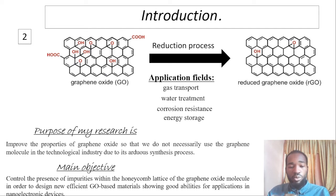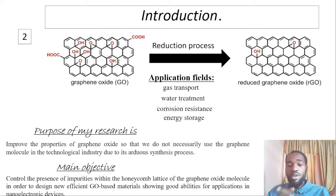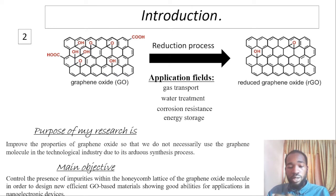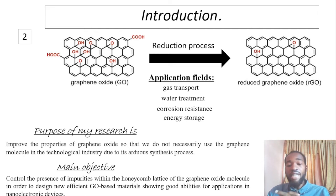The purpose of my research is to improve the properties of graphene oxide so that we do not necessarily need to use the graphene molecule in the technological industry due to the difficult yield synthesis process. The main objective of this work is to control the presence of impurities within the carbon lattice of the graphene oxide molecule in order to design new functional materials based on graphene oxide showing good aptitude in nanoelectronic devices.